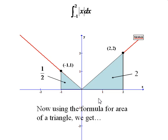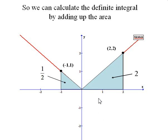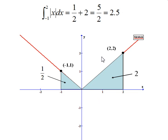So to get the overall area, we just add those together. Our definite integral, it turns out, is equal to 1 half plus 2, which as a fraction is 5 halves, or as a decimal is 2.5.